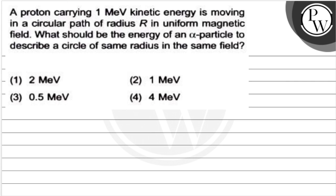Hello kids, let's see this question. The question says a proton carrying one mega electron volt kinetic energy is moving in a circular path of radius r in uniform magnetic field. What should be the energy of an alpha particle to describe a circle of same radius in the same field? These are the four options.